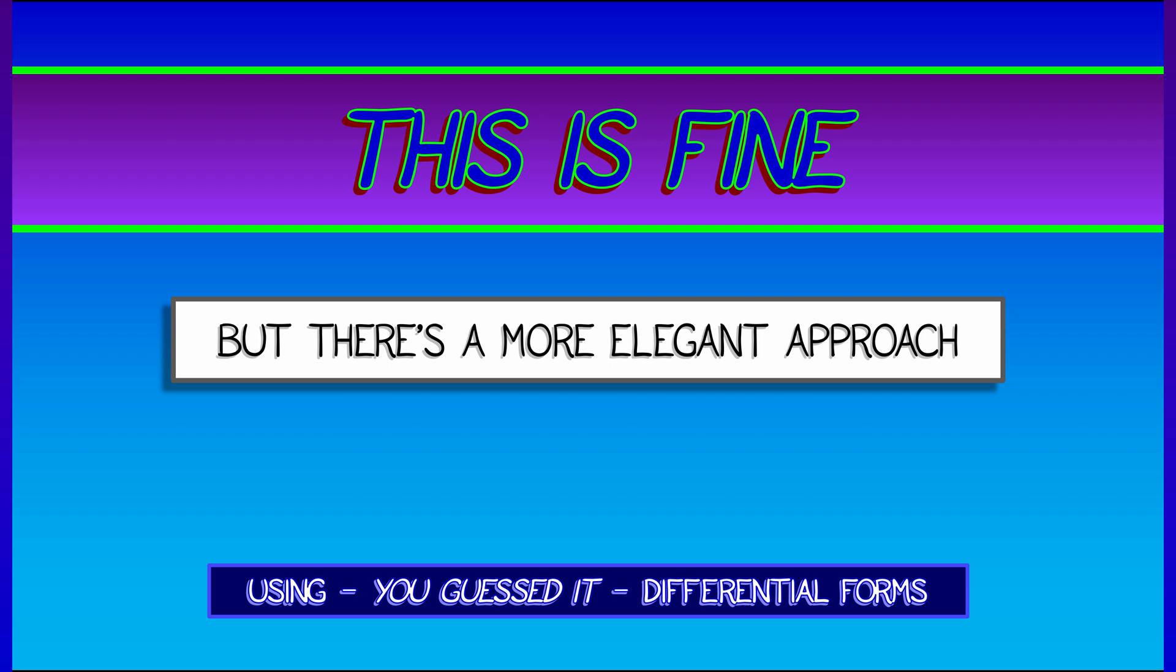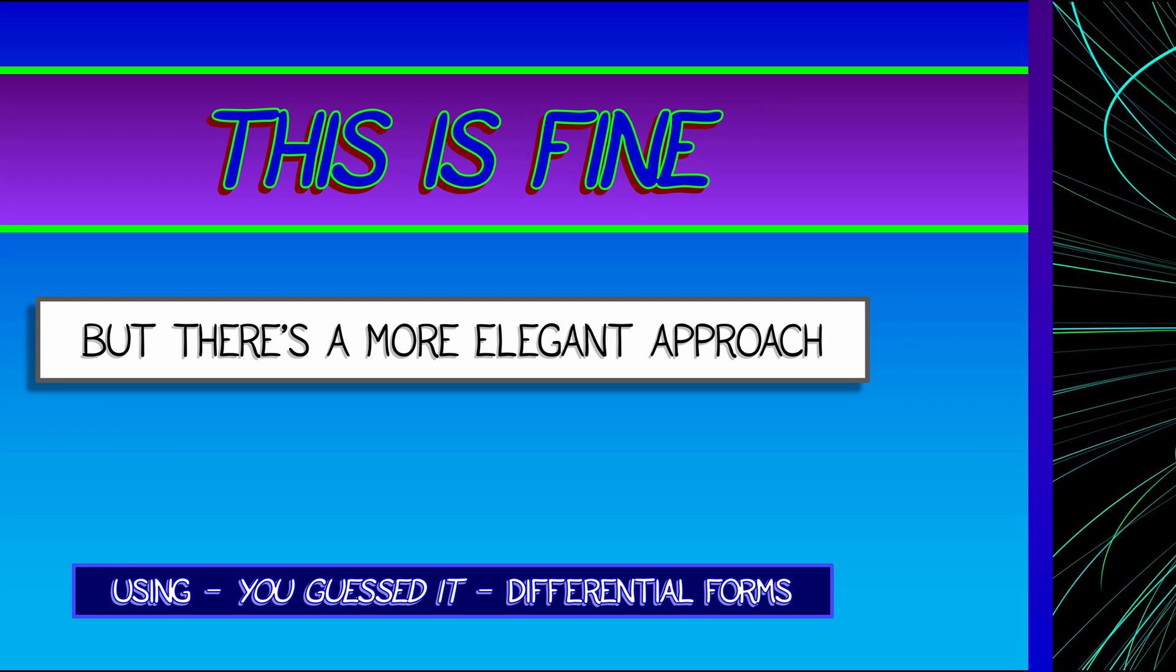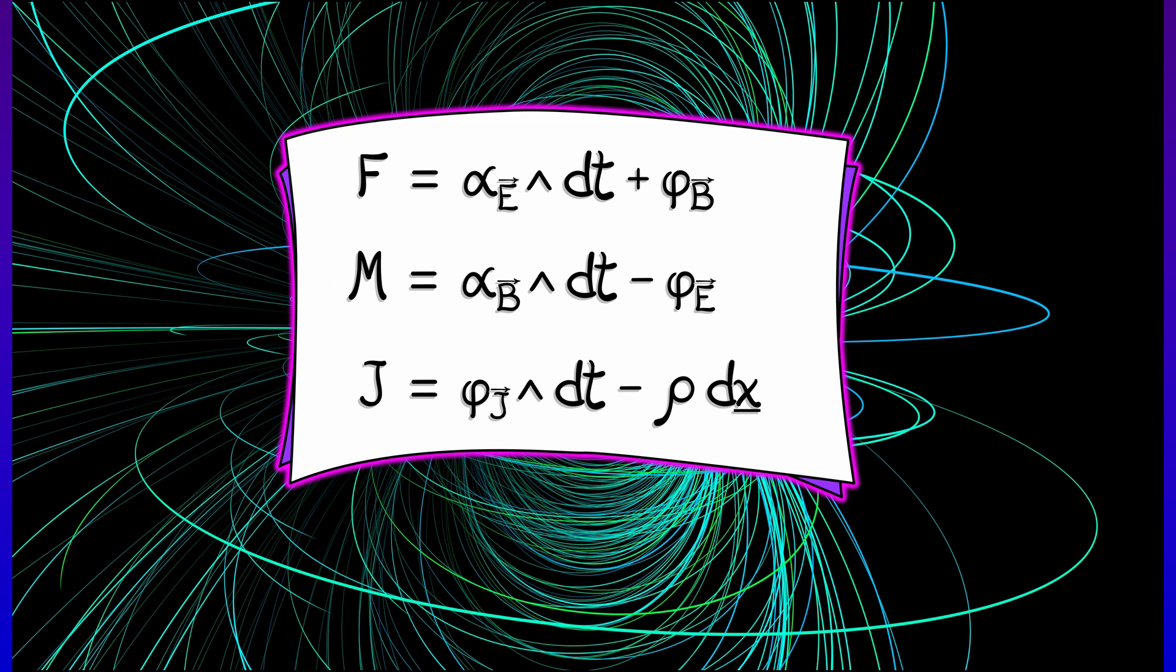Now, this is going to require a little bit of effort in terms of the setup. We're going to have to look at three new interesting form fields. The first is the Faraday two-form, F, that is the wedge of the electric field one-form, alpha-E, with dt, and then you add to it the flux of the magnetic field, phi-sub-B. This is a two-form field.